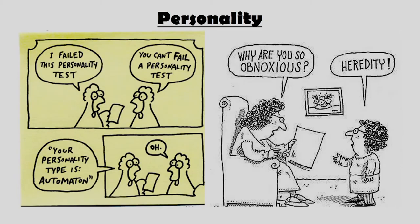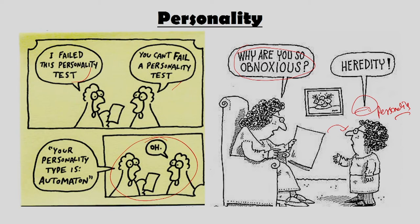To start with, there are two funny pictures which define personality. The first says 'how are you so obnoxious?' and the person blames it on heredity and personality. Similarly, the other picture shows a person who failed a personality test, and the other person says you cannot fail it because your personality type is 'automation.' Here again there is a definition of certain fixed ways of responding, and that is what this joke is built upon.